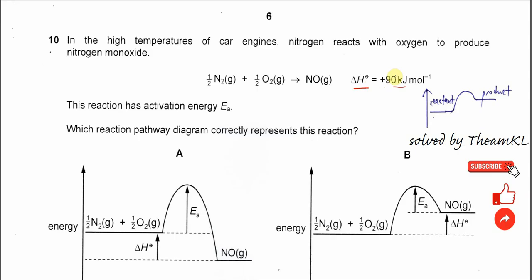From here, if we want to get the reaction pathway diagram, we must know the energy levels. The reactant is always lower than the products because it's endothermic. It will absorb heat, meaning NO will be at a higher energy level compared to the reactants — nitrogen and oxygen.